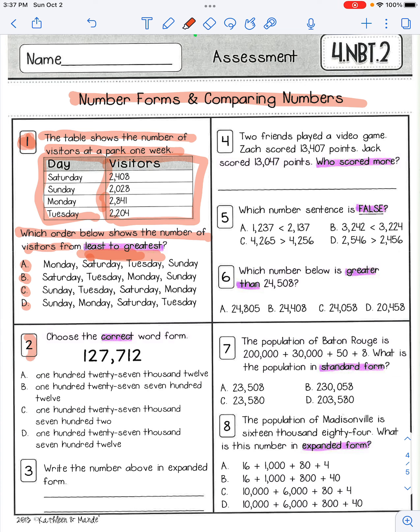Number two. Choose the correct word form. Remember, word form. So this number is 127,712. So what is the correct word form? You have 127,012, B, 127,712, C, 127,702, or D, 127,712.